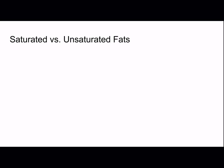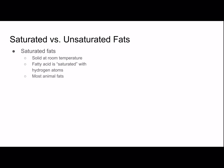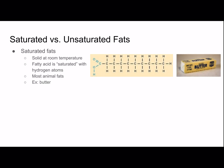Saturated versus unsaturated fats. Saturated fats are solid at room temperature — the fatty acid is saturated with hydrogen atoms, there are a lot of hydrogen atoms. Most animal fats are saturated fats; an example is butter. If you look at the picture of the fatty acid tail, you can see there are a lot of hydrogen atoms. Unsaturated fats won't have as many hydrogen atoms.